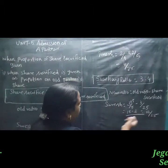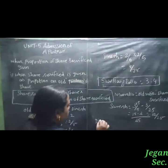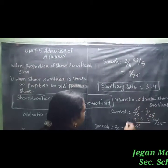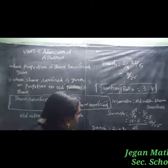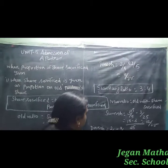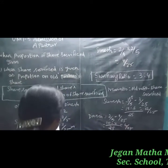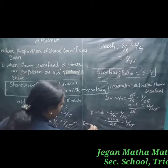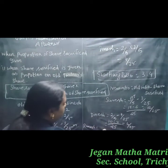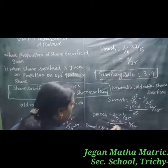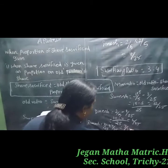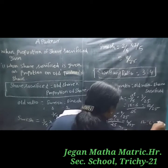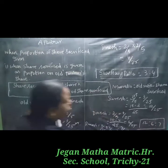For Dinesh: old ratio 2/5 minus share sacrifice 4/25 gives 10/25 minus 4/25 equals 6/25. For Ramesh: Suresh's sacrifice 3/25 plus Dinesh's sacrifice 4/25 equals 7/25. Therefore, the new profit sharing ratio is 12 : 6 : 7.